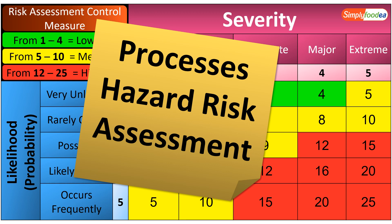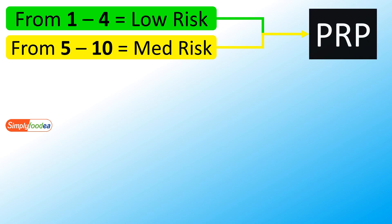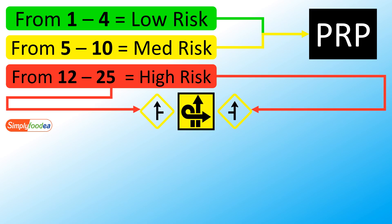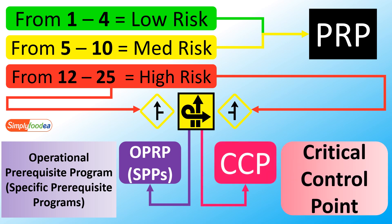From 1 to 4 is low risk, and from 5 to 10 is medium risk — the risk assessment table will control the prerequisite program. But if it is high risk, we must use the decision tree to identify if it is OPRP (the operational prerequisite program), or define it as specific prerequisite programs, or define it as CCP — the critical control point. In this video, we'll understand how to differentiate between OPRP and CCP using the decision tree.